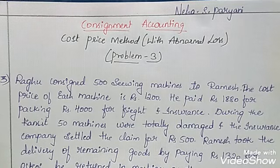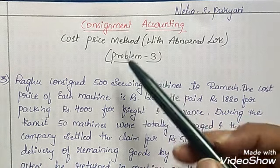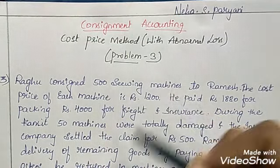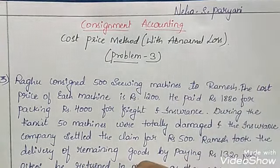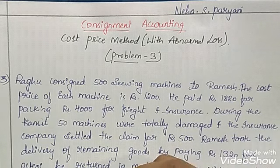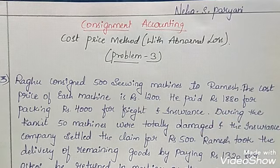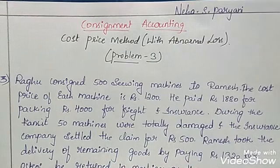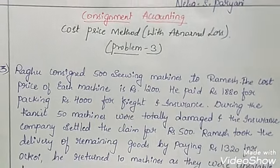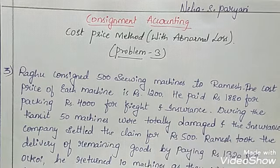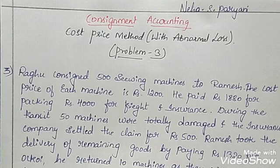Hello viewers, welcome back to my channel. I am Neha Paryani. In this session, we are going to discuss the third problem in consignment accounting. This is still the cost price method, but in this question we have abnormal loss. In my previous sessions we solved two problems, but abnormal loss was not given there. Now let us understand how to solve a problem when abnormal loss is also given. The link for the whole playlist will be provided in the description box below or at the end of this video.